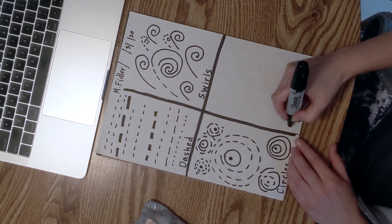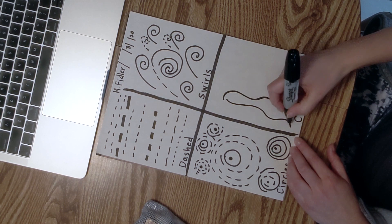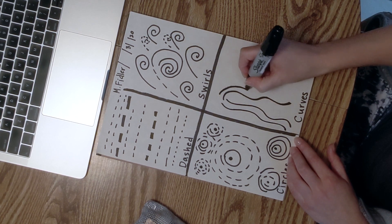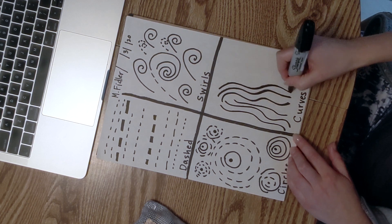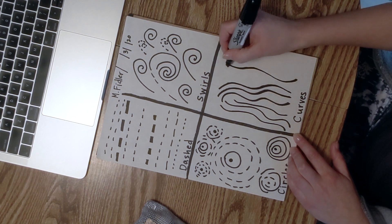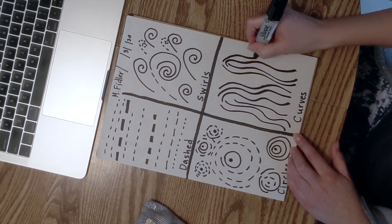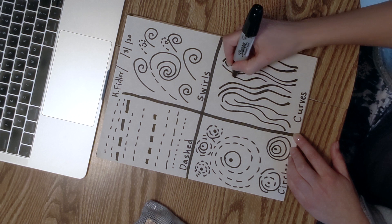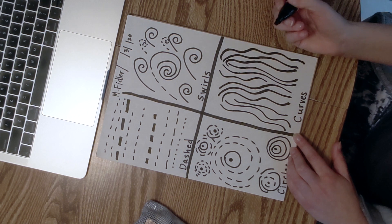And finally, curves. Practice your curvy lines. They're sort of like waves as well. These look like the cypress trees that Vincent van Gogh often painted in the south of France. Wavy long curvy lines. That's it.